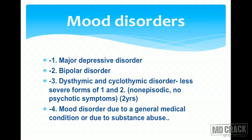The difference between major depressive and bipolar on one side, and dysthymic and cyclothymic on the other: dysthymic and cyclothymic disorders are non-episodic, have no psychotic symptoms, and must be present for two years before the label applies. The last condition is mood disorder due to a general medical condition or substance abuse, which is a separate category.